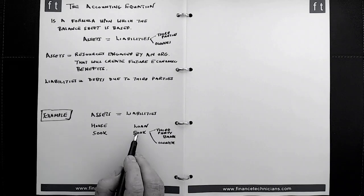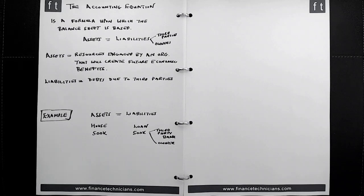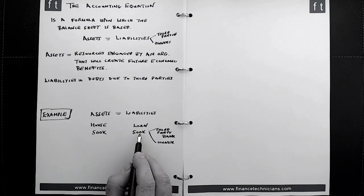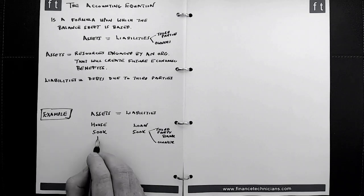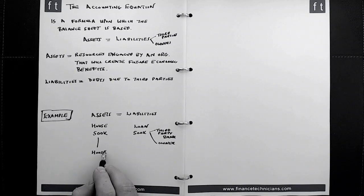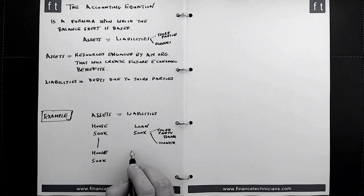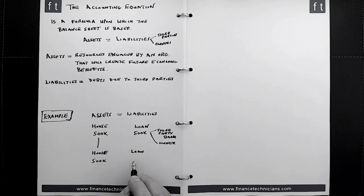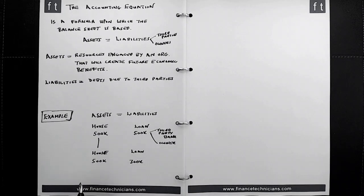Now a number of years down the line, what can happen is that a chunk of this loan gets paid down. Let's just assume that the house stays at the same value. So let's just say the house remains at 500k, hasn't moved in value either up nor down, and let's just say the loan has dropped to 300k because you've been making your mortgage repayments.